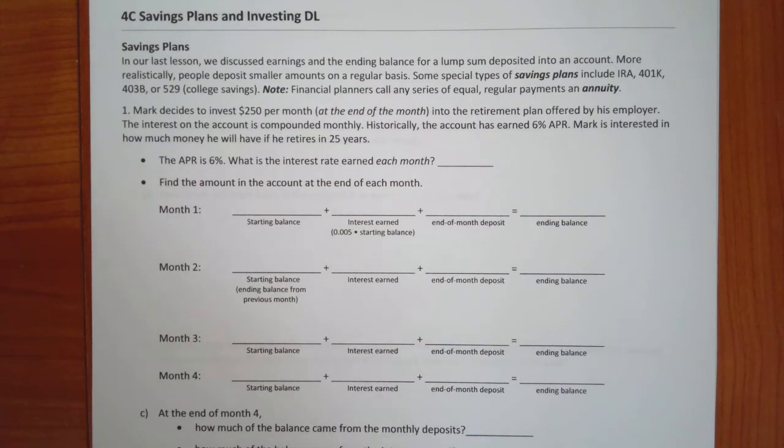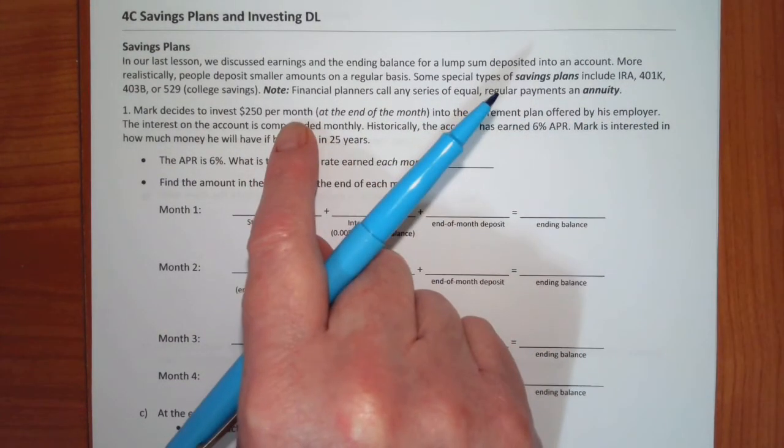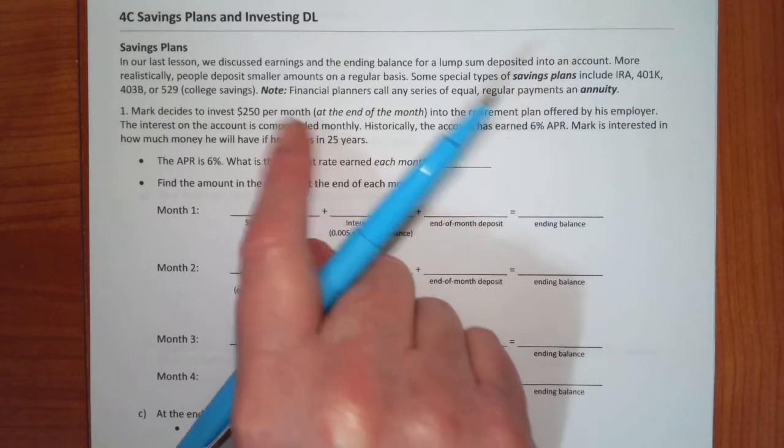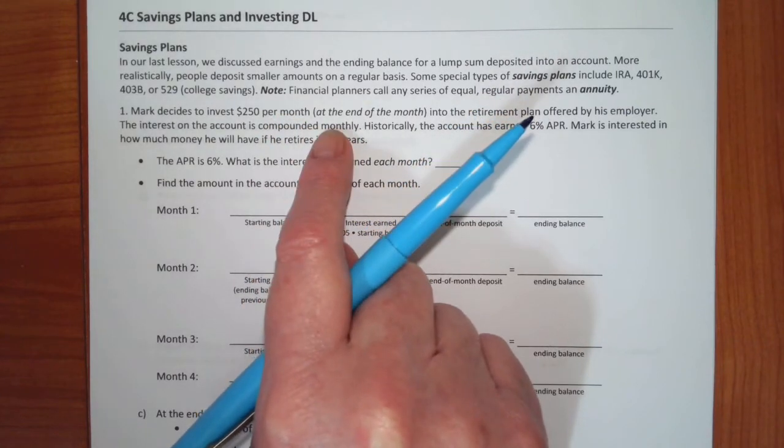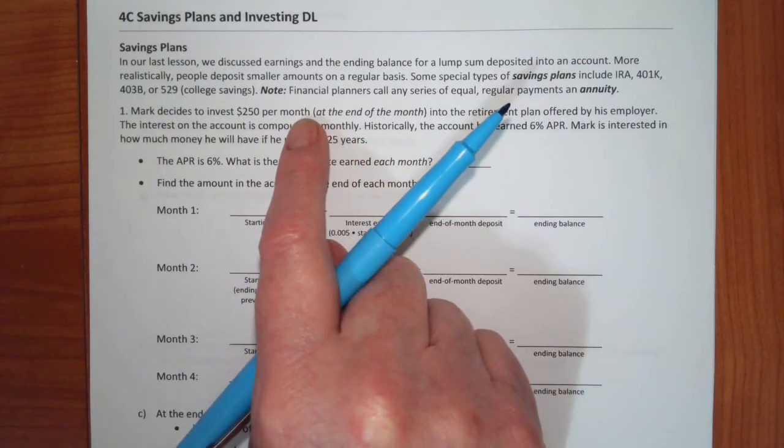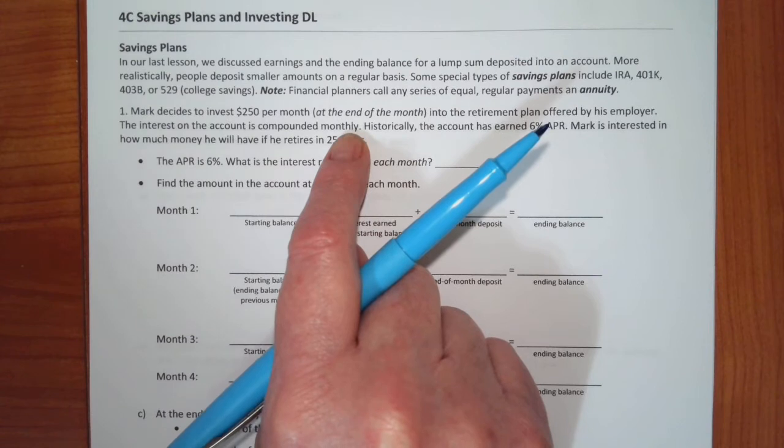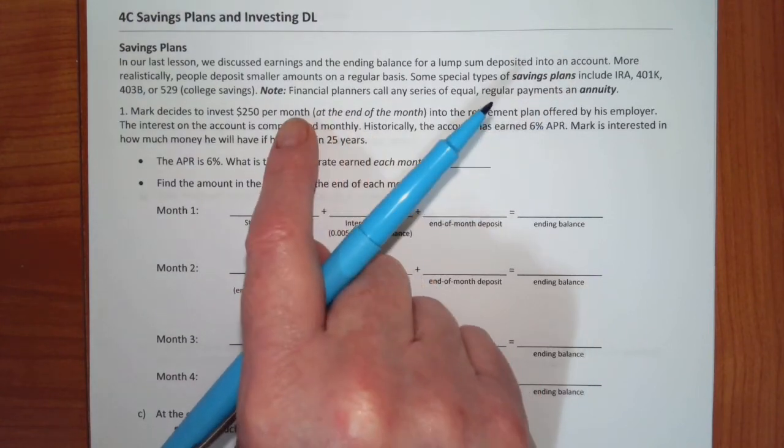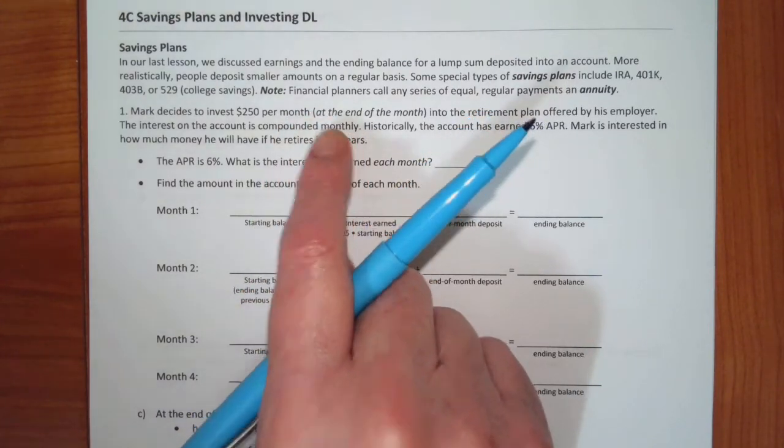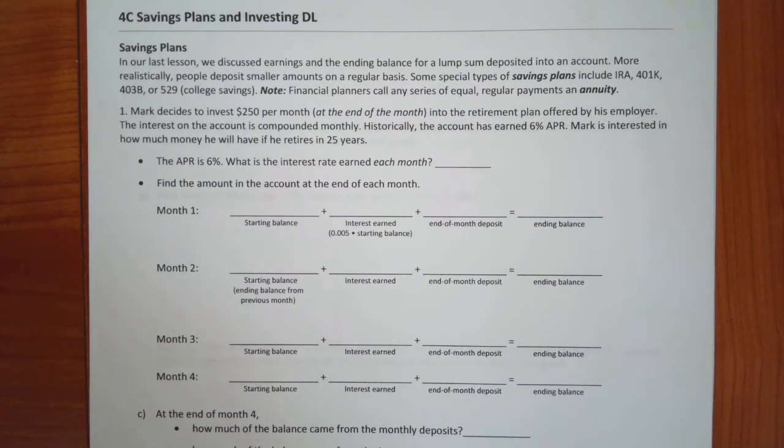Okay, so let's see how this works just by using an example. Mark decides to invest $250 a month, and this is important, it's at the end of the month, into a retirement plan offered by his employer. The interest on the account is compounded monthly. Now, the contributions and the compounding are going to match.